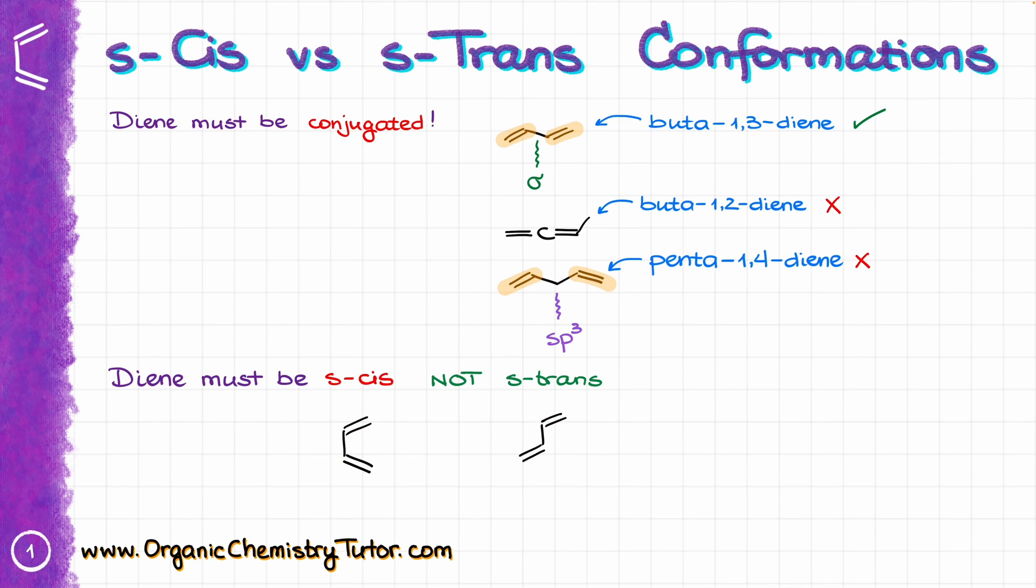For the purposes of the Diels-Alder reaction, the diene needs to be able to assume the s-cis conformation and not the s-trans conformation. That can be achieved via the rotation around the single bond in the middle of the molecule. The s-cis conformation and the s-trans conformation are typically going to be in an equilibrium with each other.